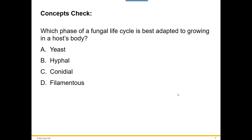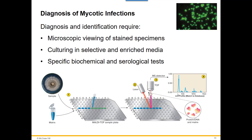Concept check: which phase of a fungal life cycle is best adapted to growing in a host body? The yeast phase — it grows best at 37 degrees Celsius. To diagnose a fungal infection, we can microscopically stain yeast cells to look at spores and identify them by size and shape. We can grow them on selective or enriched media that inhibit bacteria but promote fungal growth. We also have biochemical and serological tests, and we can look for specific antibody-antigen reactions or specific DNA.